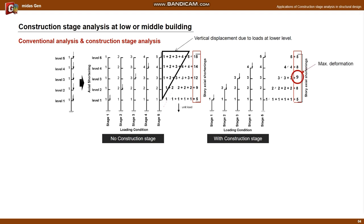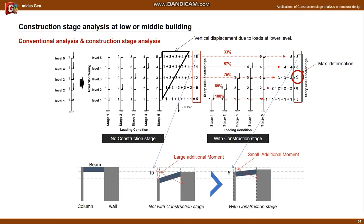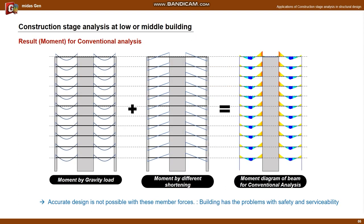Interestingly, the greatest deformation occurred in the middle story. In conclusion, the deformation caused by the deformation of the lower level is removed, and at level 5 the deformation is reduced to about 33% of the conventional analysis. After all, the member force of the conventional analysis includes a large additional member force due to the relative deformation of the column and core wall. Therefore, when designing with this analysis result, there will be problems with the safety and usability of the structure.